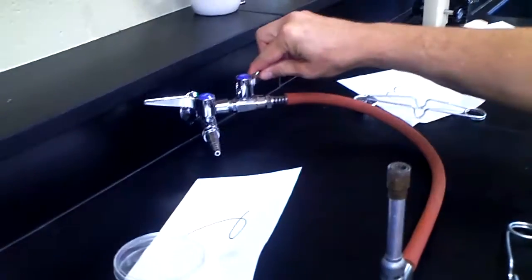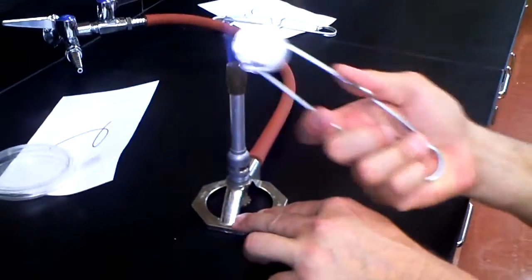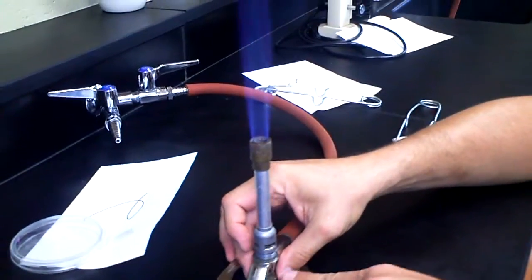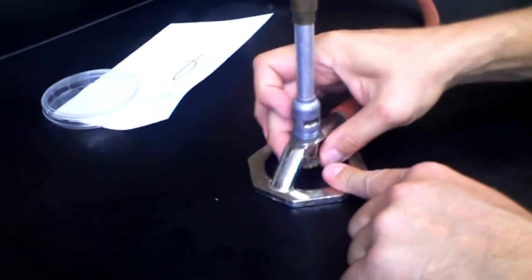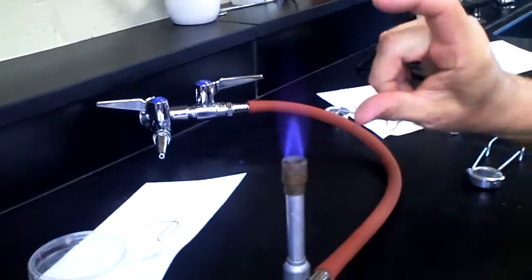We turn the valve on to parallel over here. Gas is now coming out. We light the burner. We have to adjust our flame so that it's a blue cone inside of a blue cone. We're going to turn our valve down here, righty-tighty. We want a one-inch blue cone inside a blue cone.